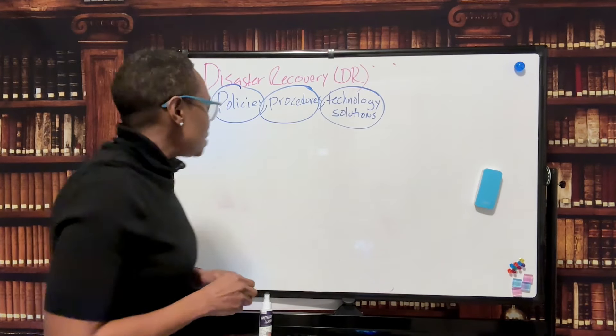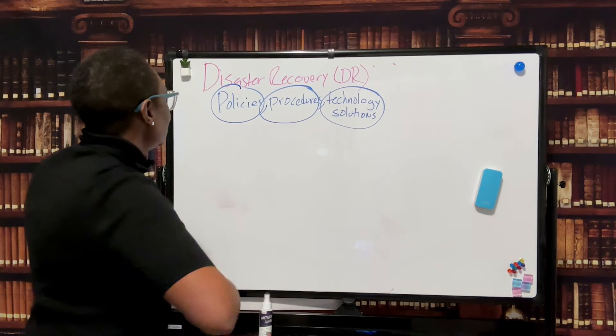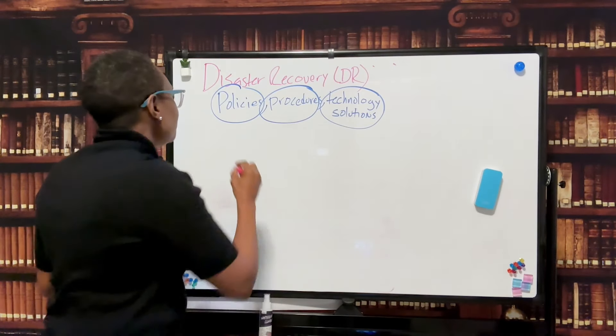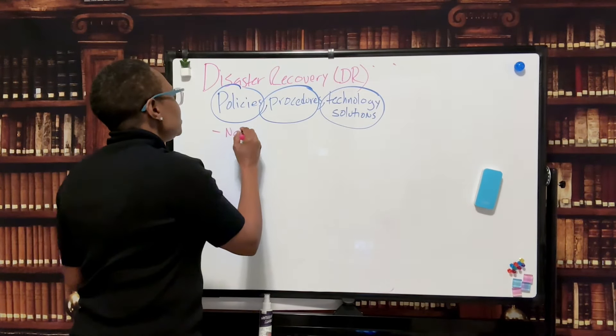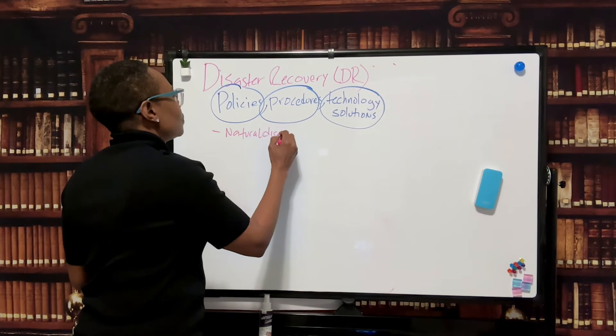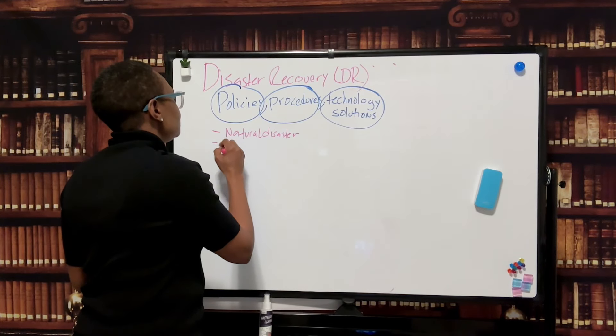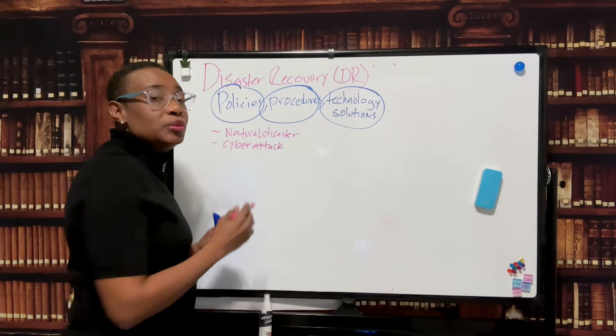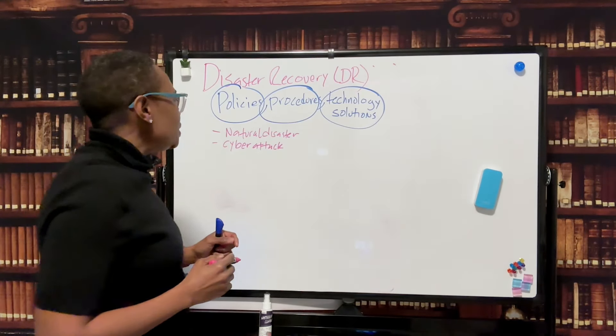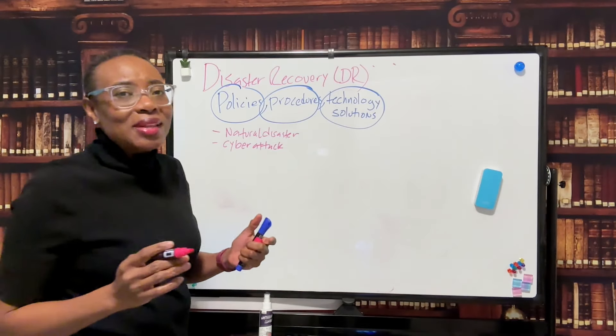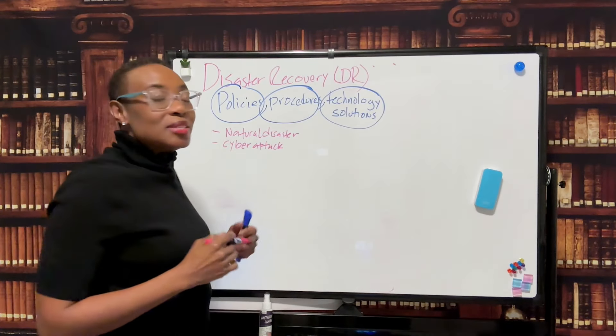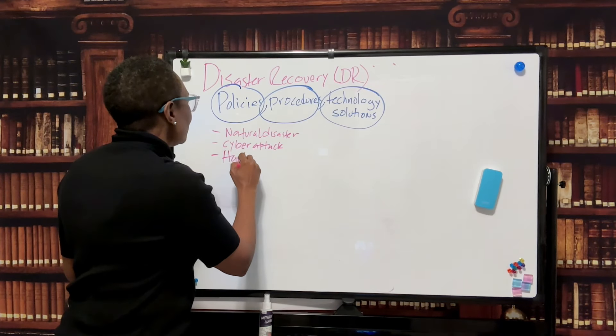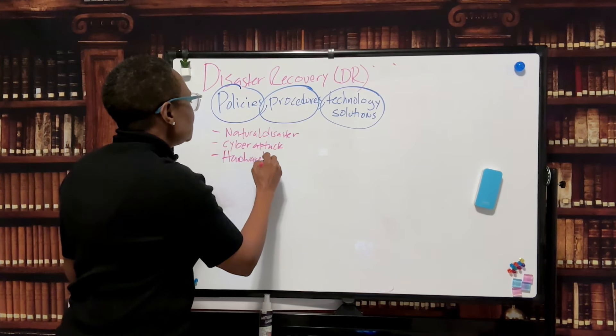So what type of event? We want to think about major things: natural disaster, cyber attack. This is huge because ransomware is on the rise, and I'm going to do a lecture in the very near future about cyber security and resiliency. Or they could be a major hardware or system failure.